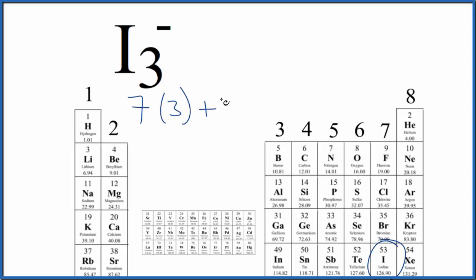So we need to add one more valence electron. That gives us 21 plus 1, 22 total valence electrons for the I3- Lewis structure.